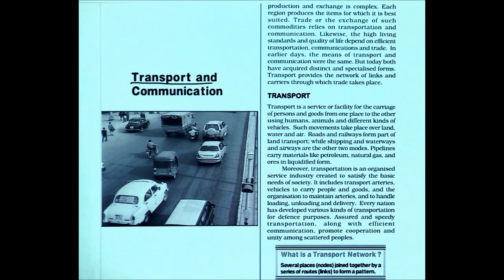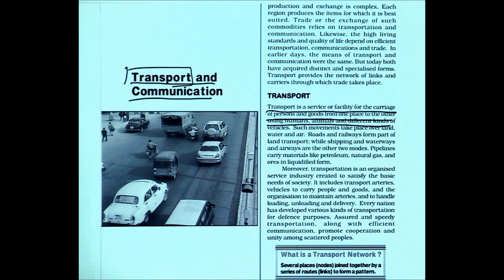We begin with our chapter entitled Transport and Communication. I will be focusing more on transport. Transport is a service or facility for the carriage of persons and goods from one place to another using humans, animals, and different kinds of vehicles. Whenever we talk about a transportation network, we need to understand complementarity — I do not produce every good and service that I require as a person, region, or country, and therefore I need to depend on others, making the transportation network important.